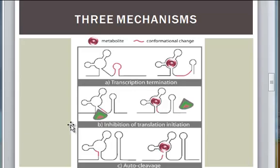Second: inhibition of translation. In the absence of ligand, the Shine-Dalgarno sequence, which is the ribosomal binding site, is available. The ribosome can bind and therefore translation occurs. But in the presence of ligand, the Shine-Dalgarno sequence is sequestered.